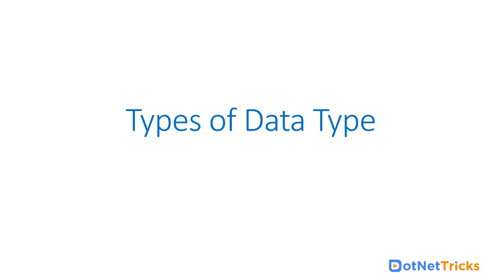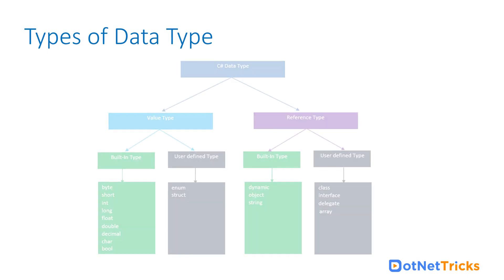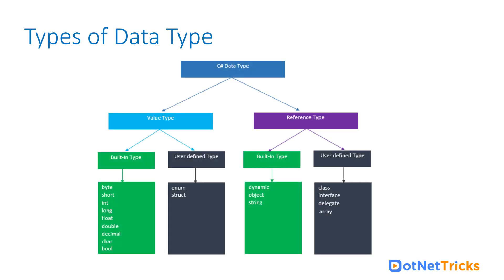Now, let's see what are the different types of data types in C#. So in C#, we have two types of data types: value type and reference type.